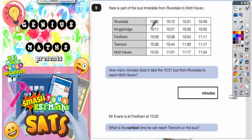Question 9. Here is part of the bus timetable from Riverdale to Mott Haven. How many minutes does it take the 10:31 bus from Riverdale to reach Mott Haven?